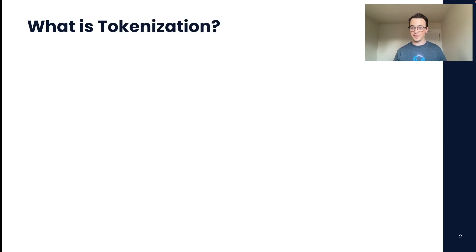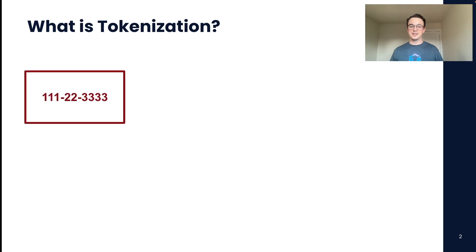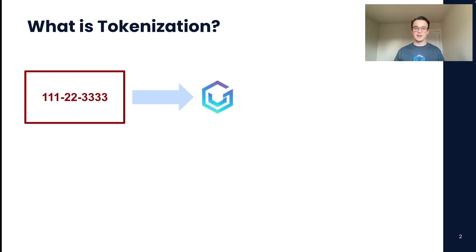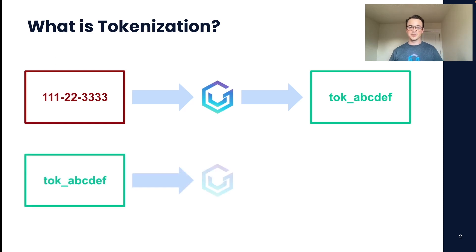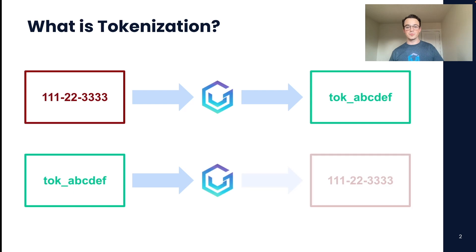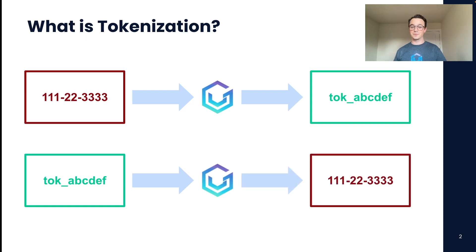So first off, what is tokenization? Here I have an example of a social security number. Using VGS, we can vault that social security number and provide you back a tokenized version that you can store in your environment. With this token, we can ensure that only privileged users can access that original data. Without being a privileged user, you can never get the original social security number.